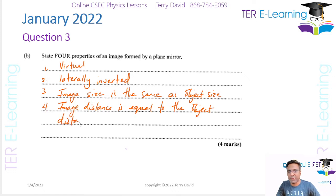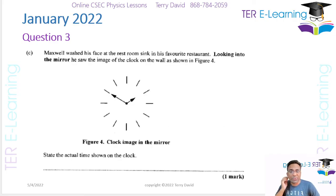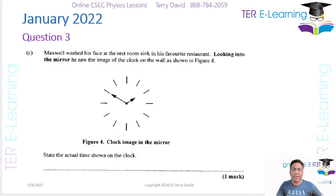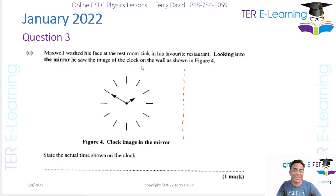So that's all four properties. The next part: Maxwell washed his face in the restroom sink in his favourite restaurant, and looking into the mirror he saw the image of a clock on the wall — we need to find the actual time of the clock. What he's seeing is the image, so that's not the actual time.